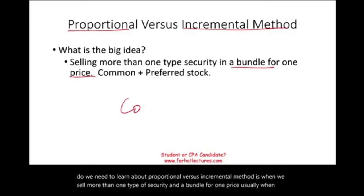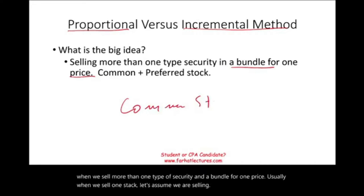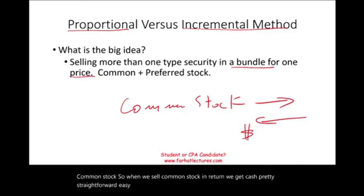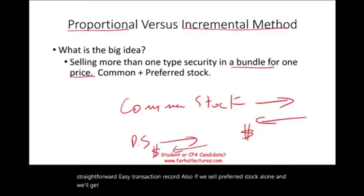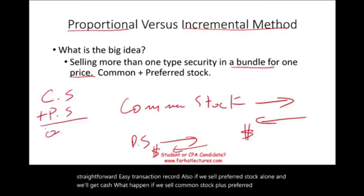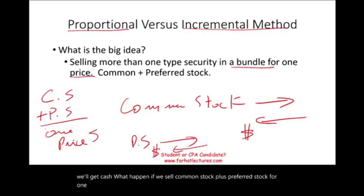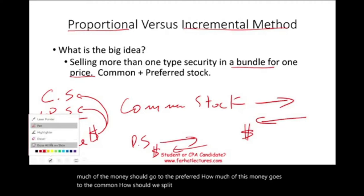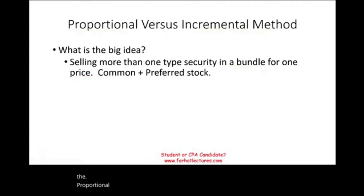Usually when we sell one stock — let's assume we are selling common stock — we get cash. Pretty straightforward, easy transaction to record. Also, if we sell preferred stock alone, we get cash. But what happens if we sell common stock plus preferred stock for one price? They pay us one price, but we don't know how much of the money should go to the preferred and how much goes to the common. How should we split these amounts? This is where the proportional versus the incremental method comes into play.